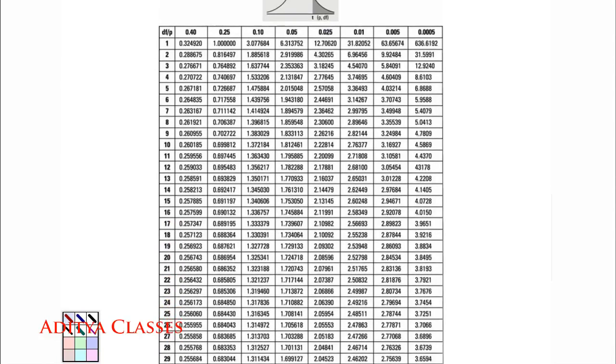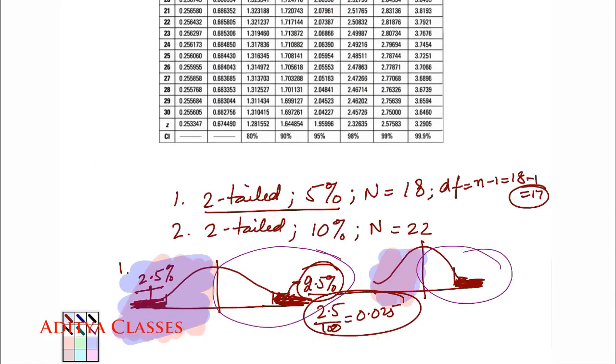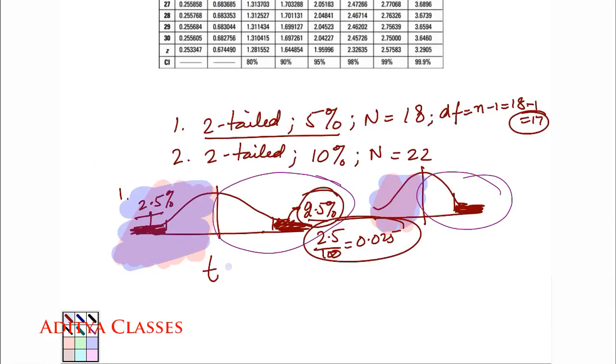N18. N18 means degrees of freedom are how much? N-1 that is 18-1 that is 17. So, my question has reduced to 2.5%. 2.5% is what? 2.5 upon 100 which is 0.025. So, it is 0.025 and degrees of freedom 17. Here, we have 0.025 and degrees of freedom 17. You travel over here. You travel from there. It is 2.109. So, T value is 2.109.